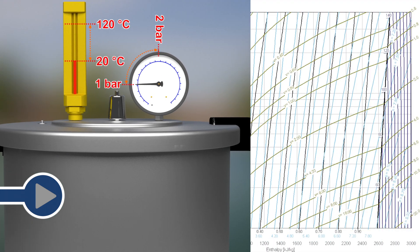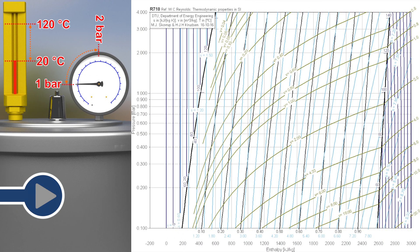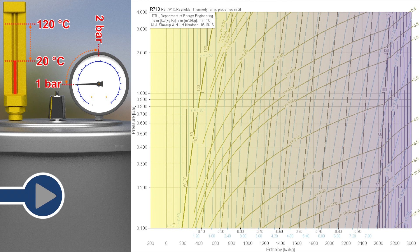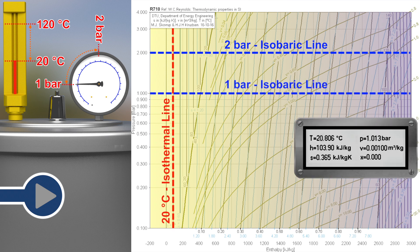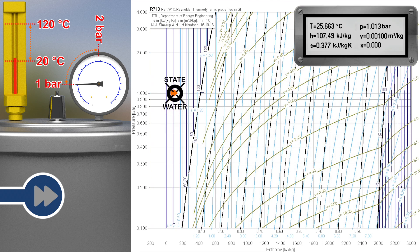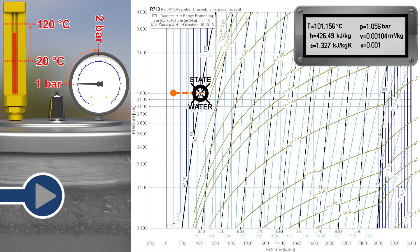The overpressure valve of our cooker is adjusted such that it opens when the absolute pressure in the cooker reaches 2 bar in order to release steam. At the beginning, the water in the pressure cooker is at 1 bar absolute and 20 degrees Celsius. After the hot plate is switched on, the water heats up to a temperature of 100 degrees Celsius at a constant absolute pressure of 1 bar, as in the previous example, and starts to boil.